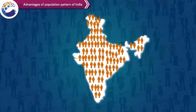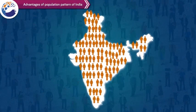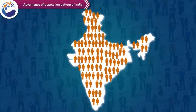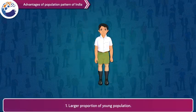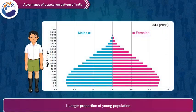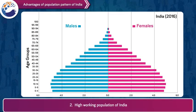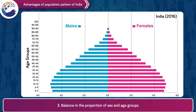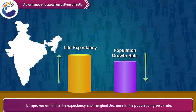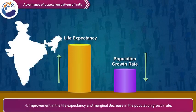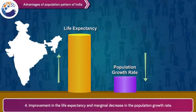Let us now look at the advantages of the population pattern of India. 1. Population of India is considered young as a larger proportion of population is in the children age group. 2. The proportion of working population (youth) in India is higher than dependent population, which is the total of very small children and older generations. 3. There is more or less balance in the proportion of male and female in all age groups. 4. India has shown improvement in life expectancy and a marginal decrease in the population growth rate.